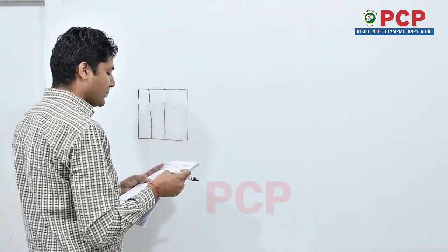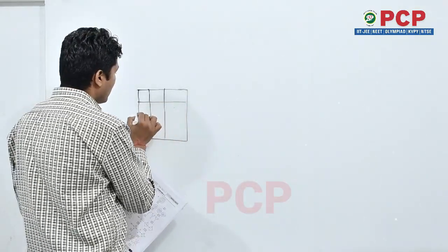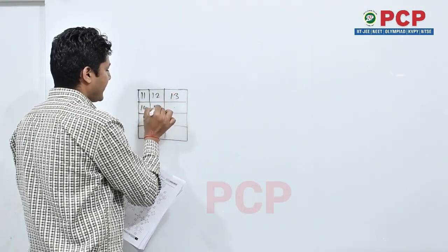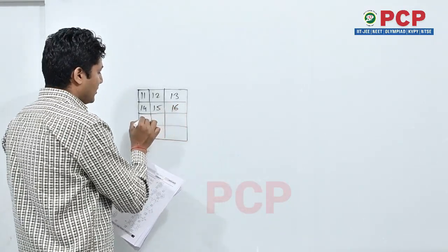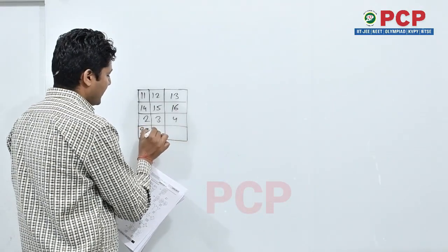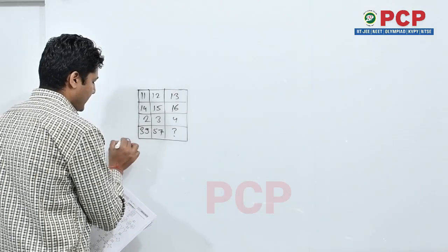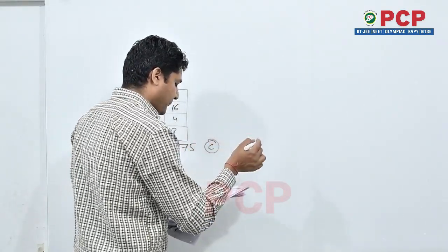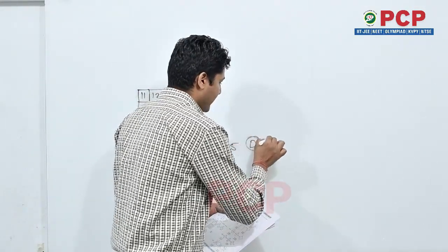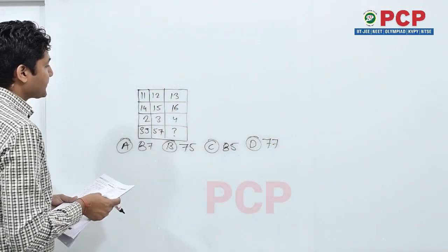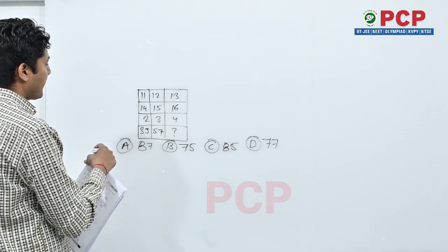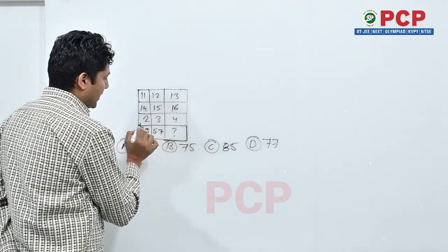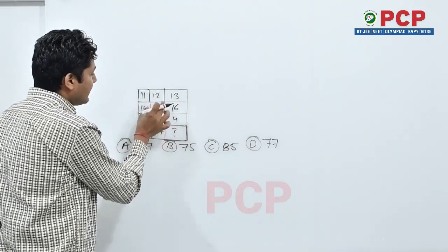I am taking the maximum possibilities of questions. 11, 12, 13, 14, 15, 16, 2, 3, 4, 39, 57 question mark. Option A 87, option B 75, option C 85, option D 77. Now what have we done? What do we do in this question? How do we do this?